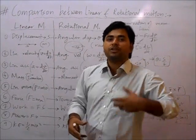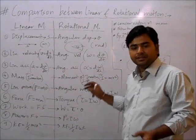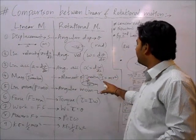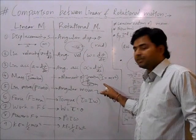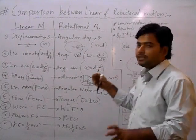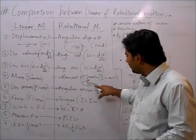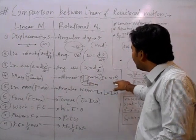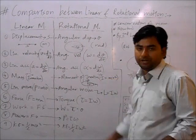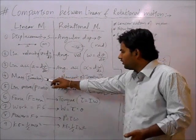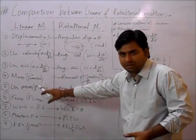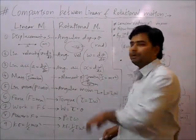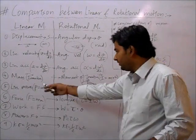Next is mass. In linear motion, mass is completely responsible for the inertia of the body. In rotational motion, the equivalent is called moment of inertia. Moment of inertia I = MR², where M is the mass and R is the distance of that mass from the axis of rotation. So wherever we use mass in linear motion, we use moment of inertia in rotational motion.